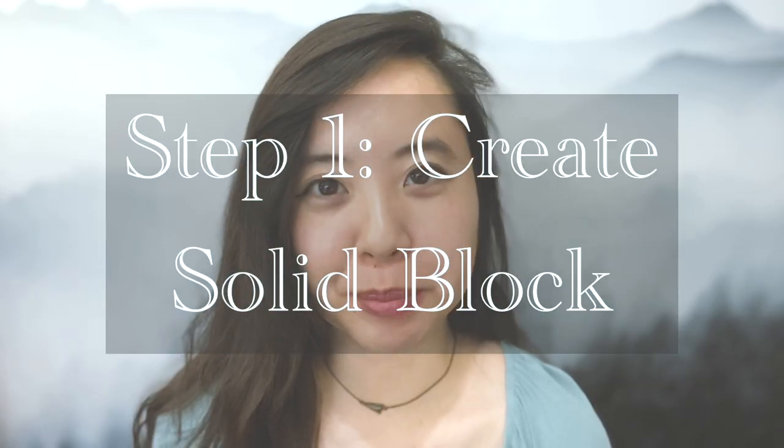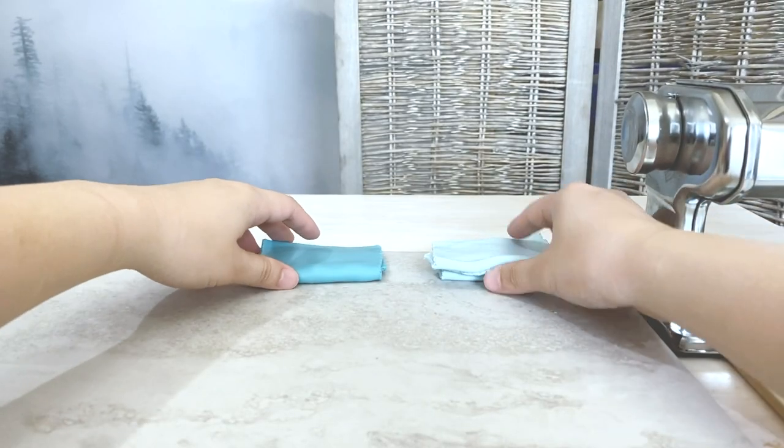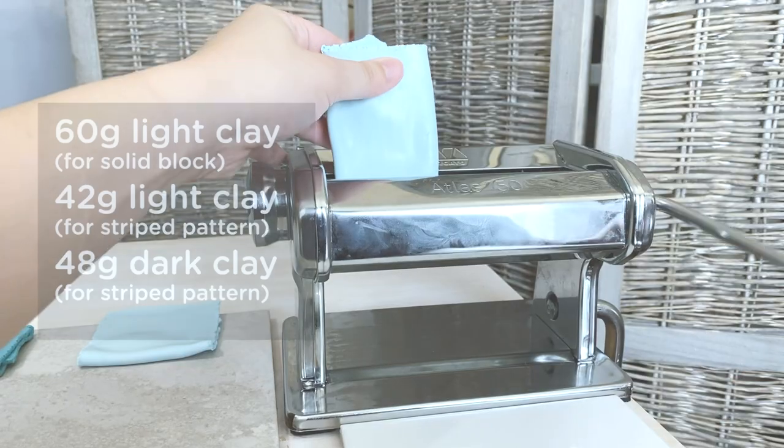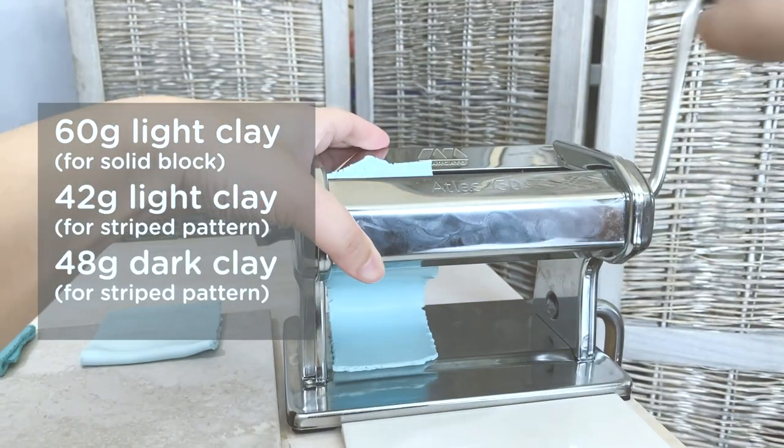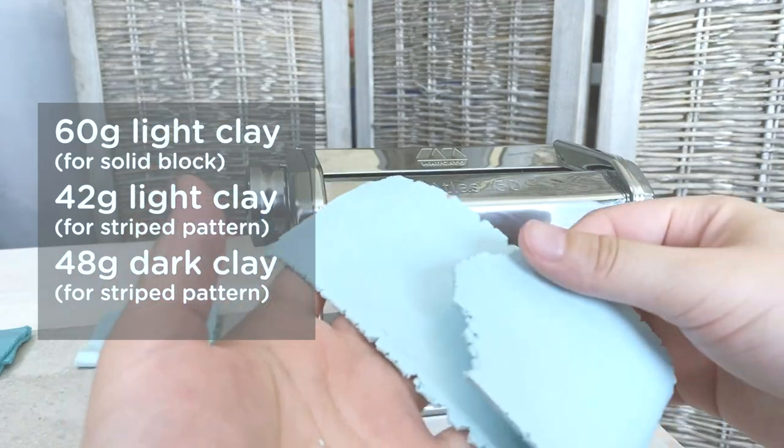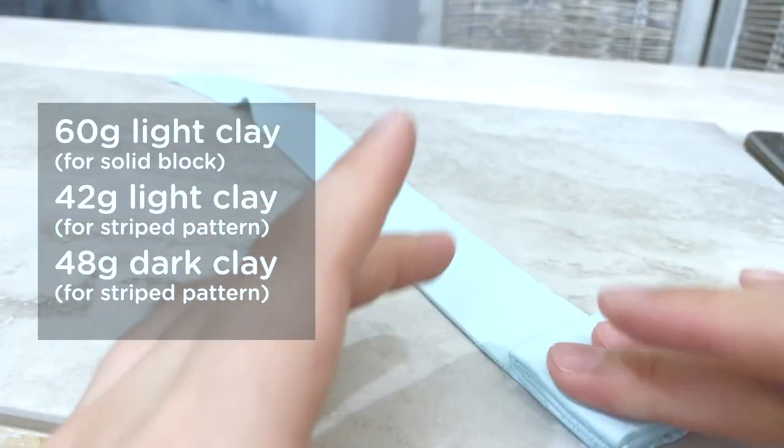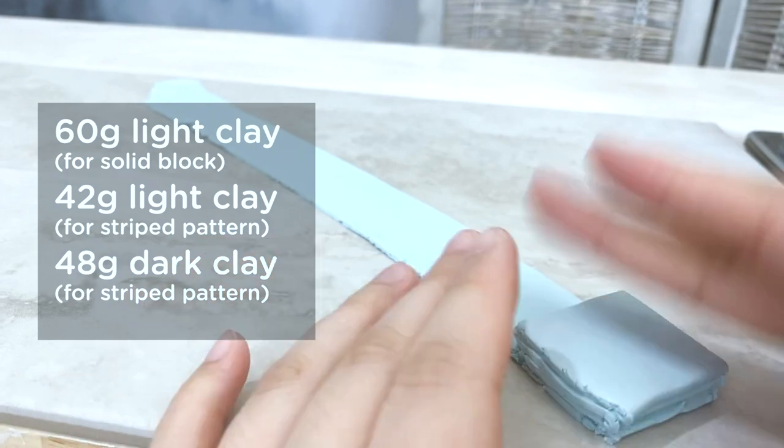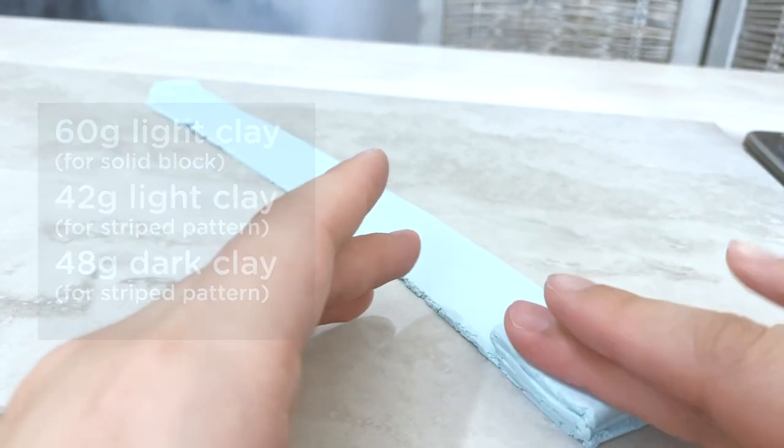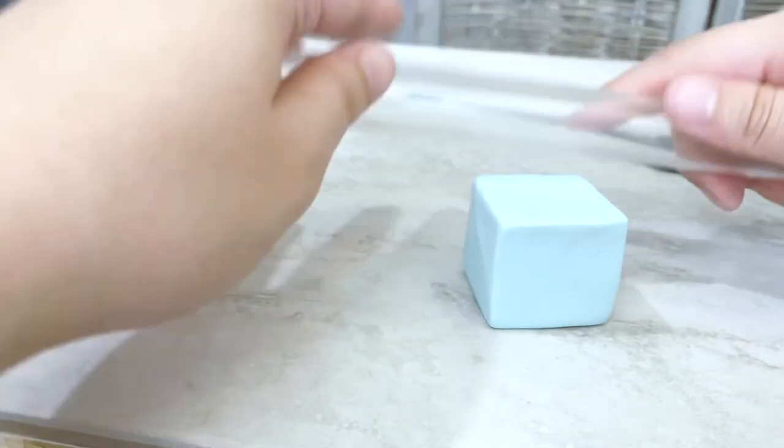Step 1: Create solid block. First, you want to create a solid rectangular block using about 60 grams of lighter color clay. I'll put a full list of color clay ratios in the description. I think if y'all have been watching my videos, y'all should be able to create a loaf using a solid color and get to this point.